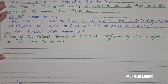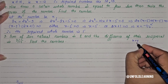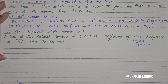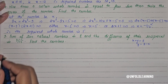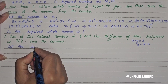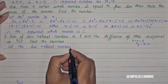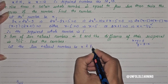Question number 3: Sum of 2 natural numbers is 8 and the difference of their reciprocals is 2/15. Find the numbers. We have 2 natural numbers. If we take the numbers as x and y, with sum 8, then y = 8 − x. Let the 2 natural numbers be x and (8 − x).